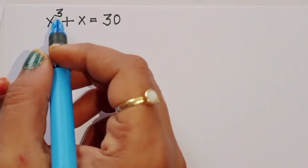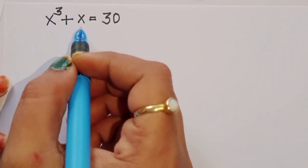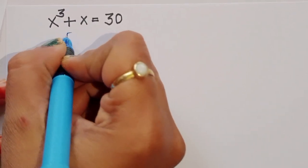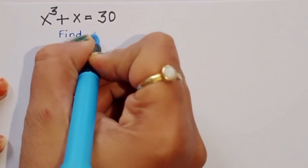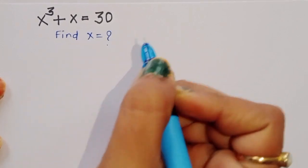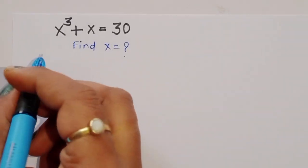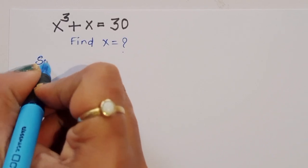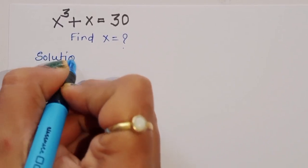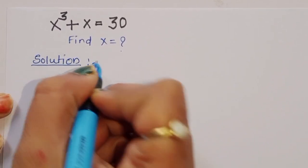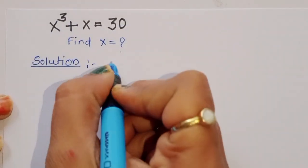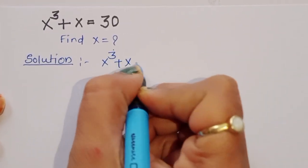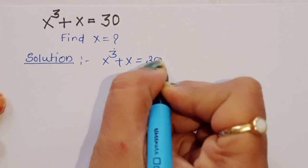The question is: given x³ + x = 30, we have to find out the value of x. Now let's start the solution. What is given here: x³ + x = 30.